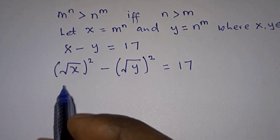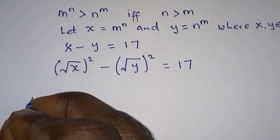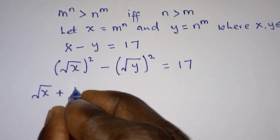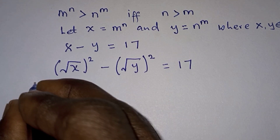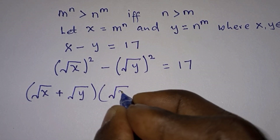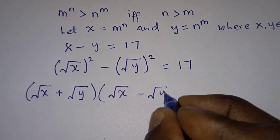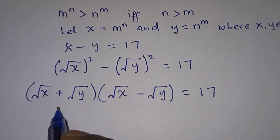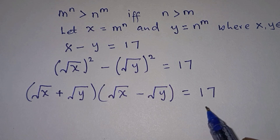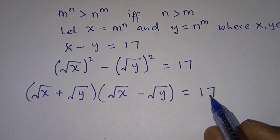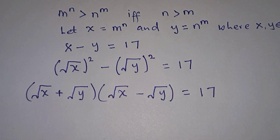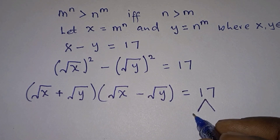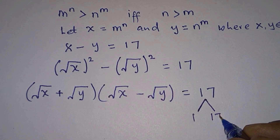On the left hand side we have a difference of two squares, which can be expressed as the square root of x plus the square root of y, times the square root of x minus the square root of y, and this is equal to 17. We have the product of two factors giving us 17. Since 17 is a prime number, the only factors are 1 and 17.